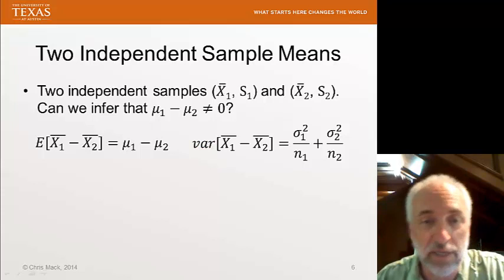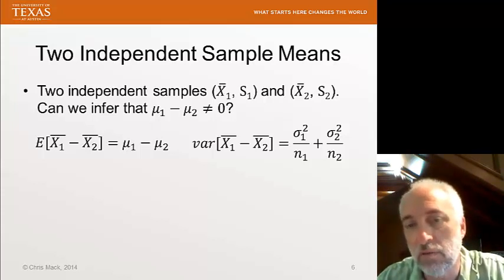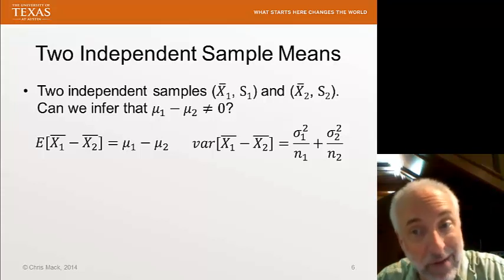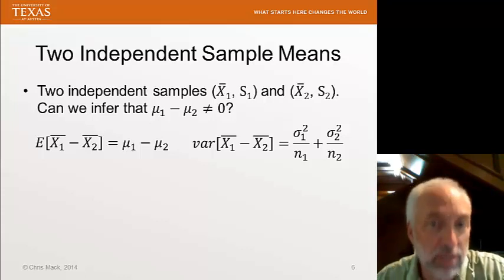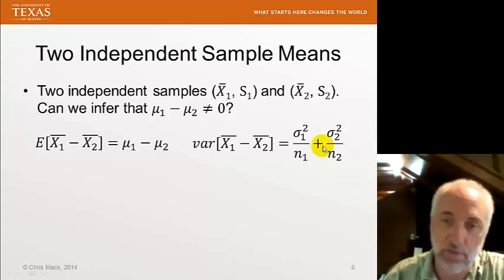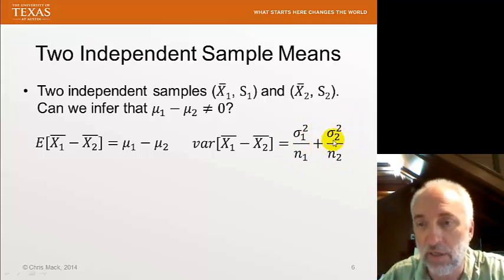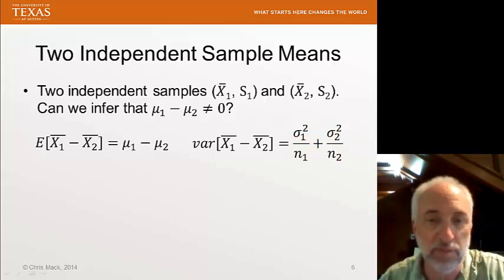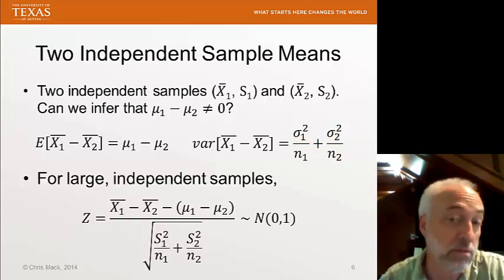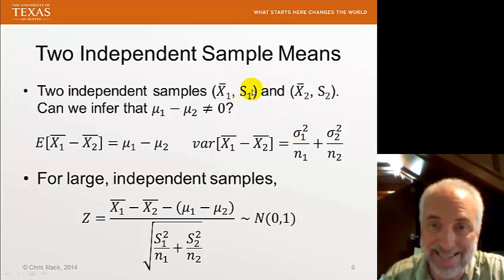What we really want to know besides whether the estimator is unbiased is what is the variance of our estimator. So our estimator of the difference in the means is X bar 1 minus X bar 2 and the variance of that, we can now calculate if we assume independent samples. You recall that the variance of the sum of two independent random variables will be the sum of their variances. So the variance of X1 bar is here, the variance of X2 bar is here and sum their variances because they're independent.